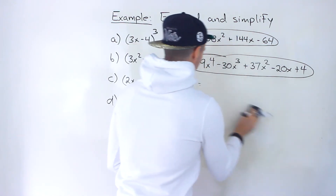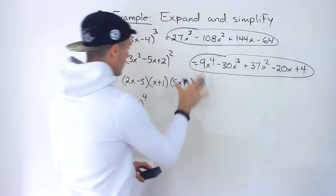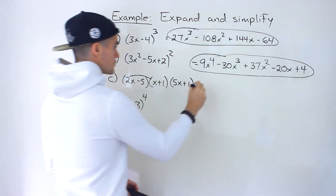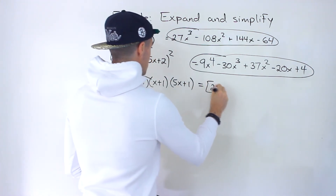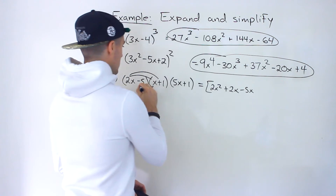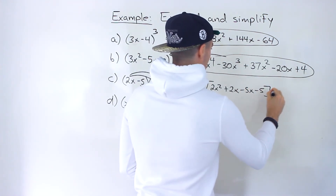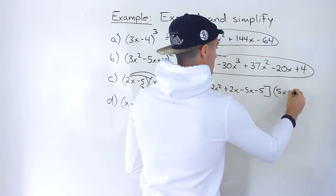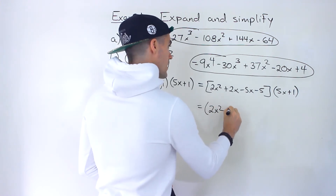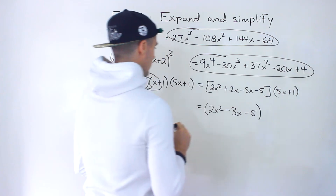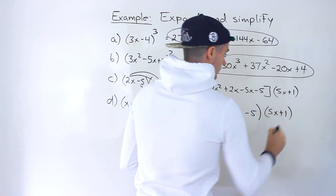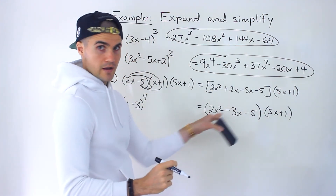Moving on to part c — there are no exponents here, just three different binomials multiplying each other. Let's start by multiplying the first two: 2x times x gives 2x squared, 2x times 1 gives 2x, negative 5 times x gives negative 5x, negative 5 times 1 is negative 5. Simplifying — 2x minus 5x gives minus 3x — so we have 2x squared minus 3x minus 5, with 5x plus 1 on the outside.